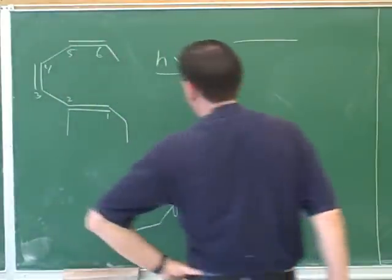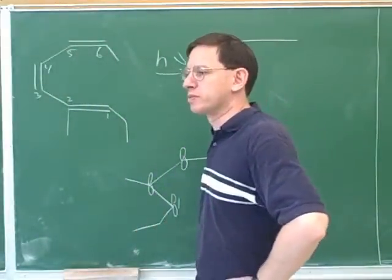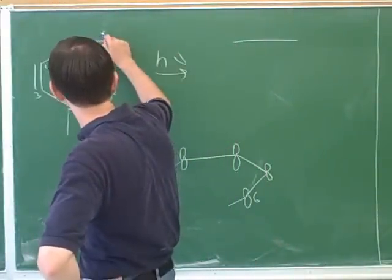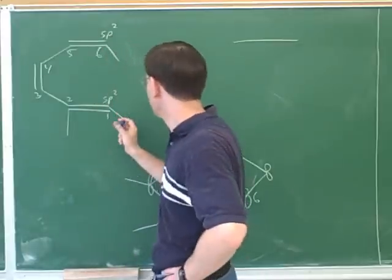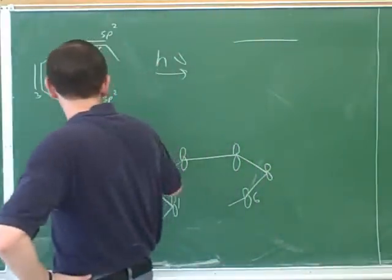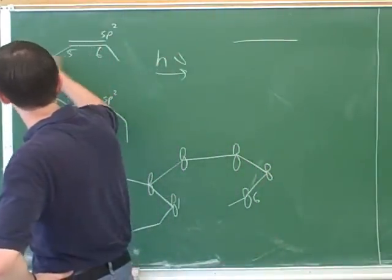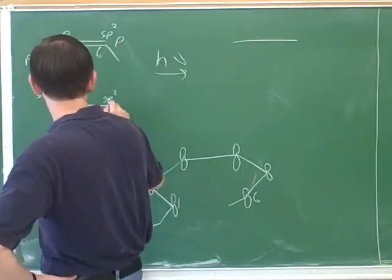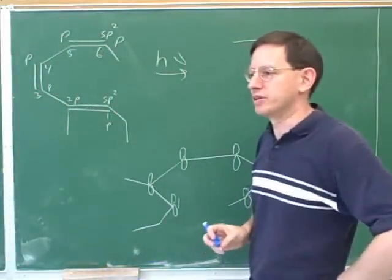First of all, we have to decide how many overlapping p orbitals there are. Here's the first sp2 carbon, and here's the last sp2 carbon. This over here is not sp2. So here's a p orbital, p, p, p, p, and p — one, two, three, four, five, six overlapping p orbitals.